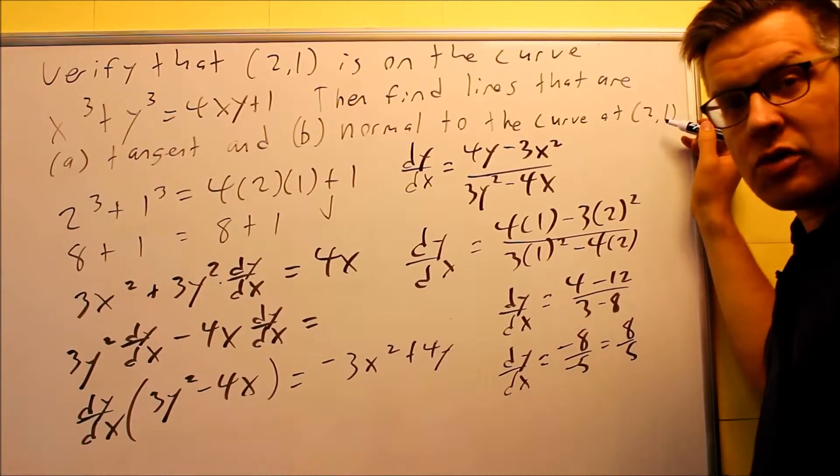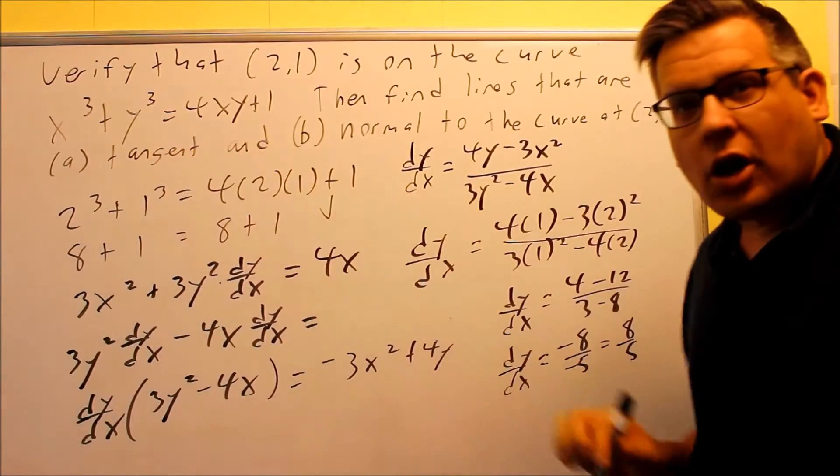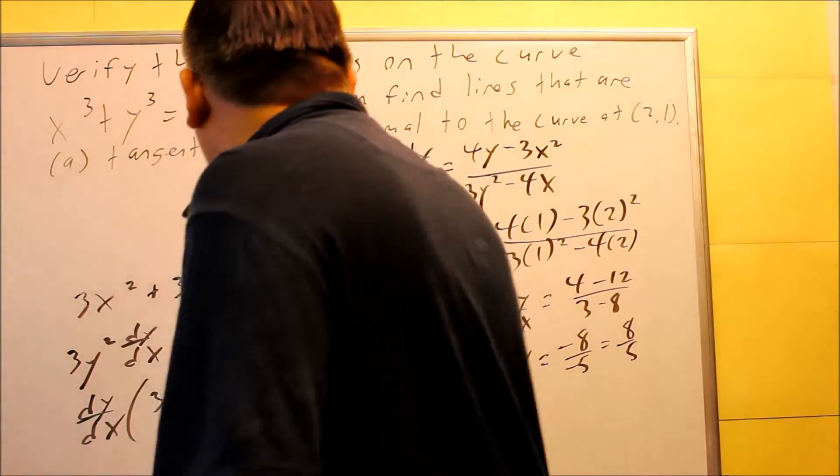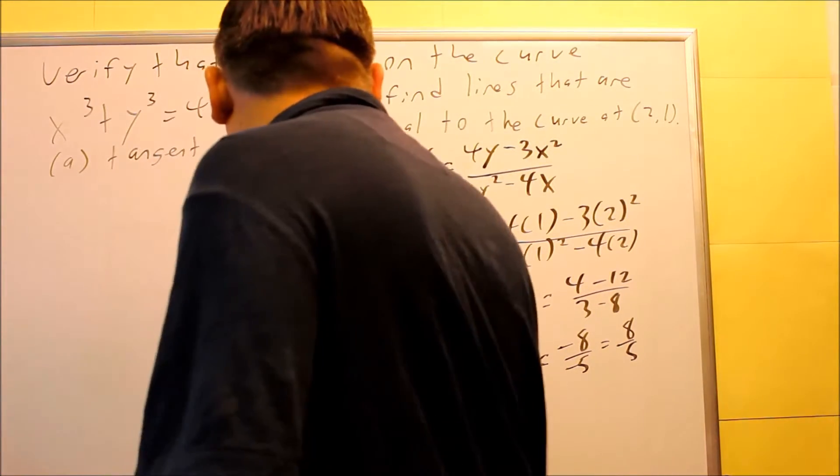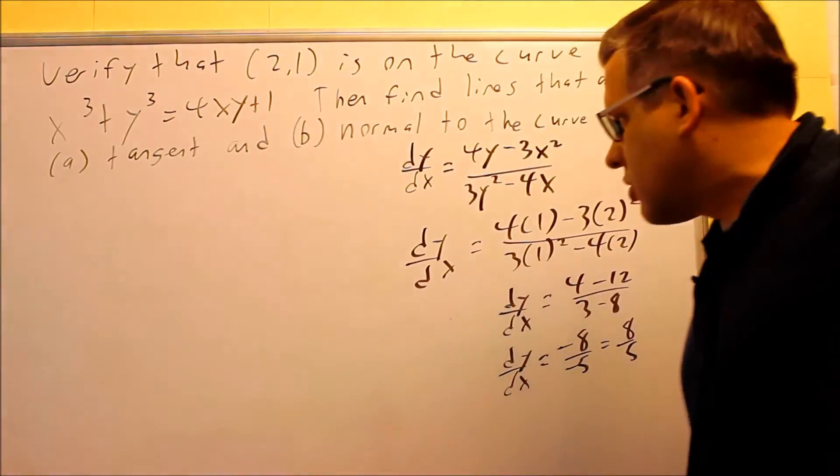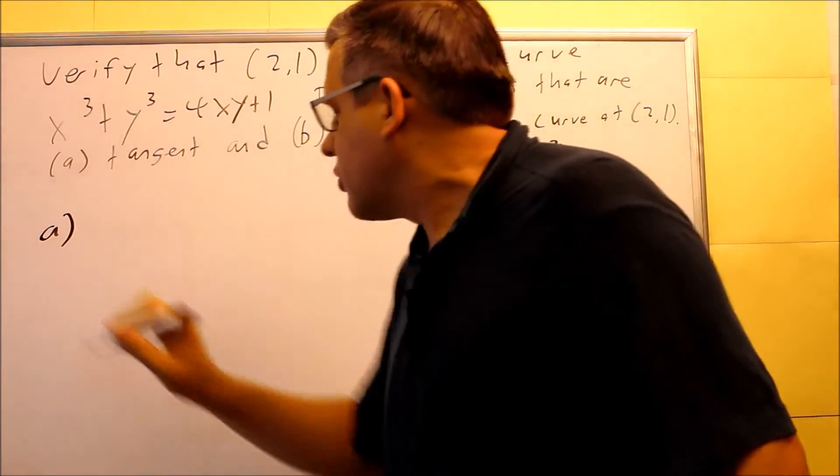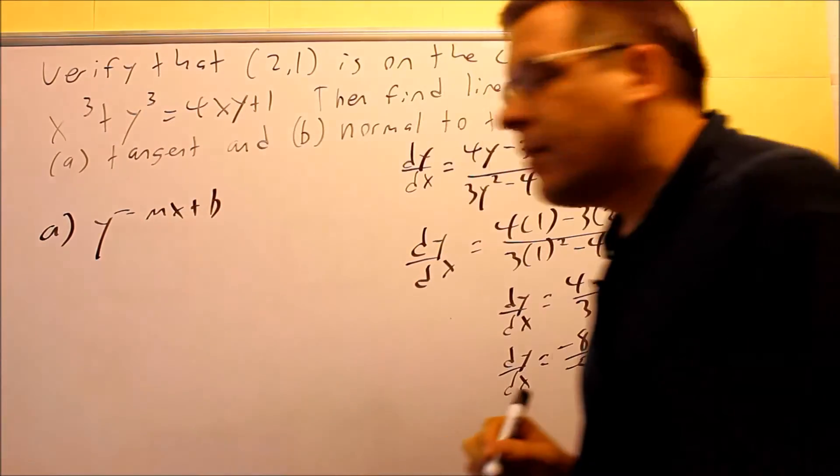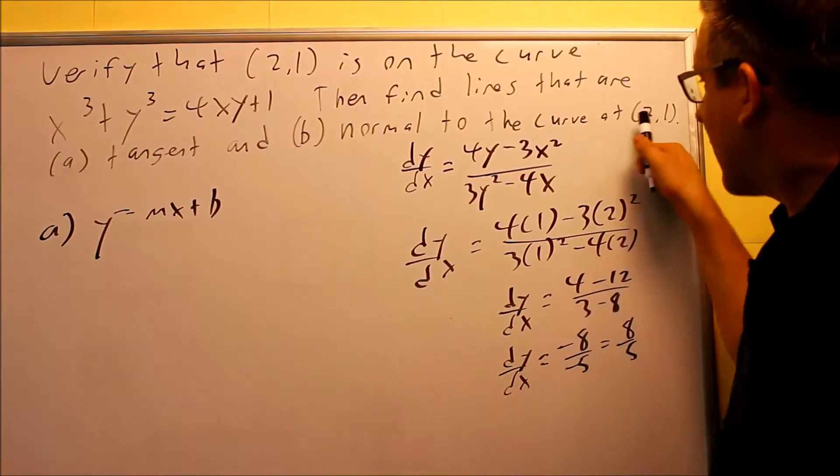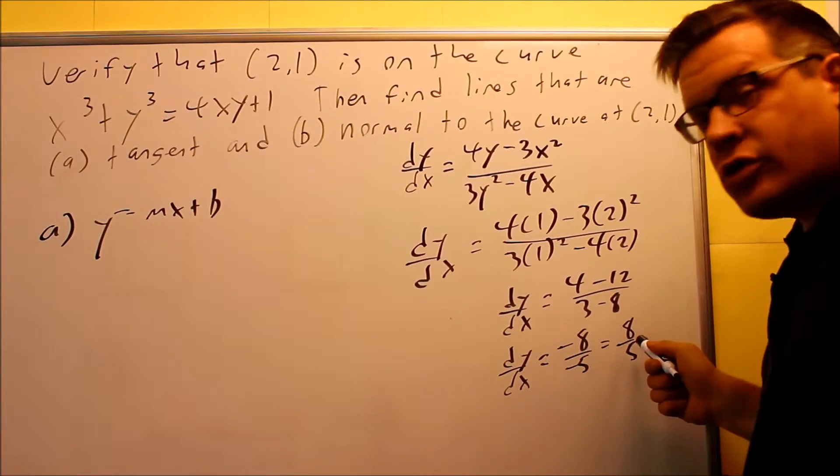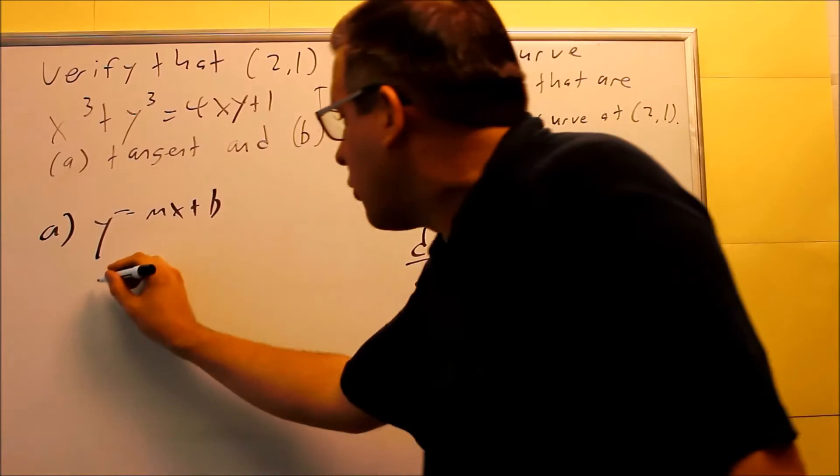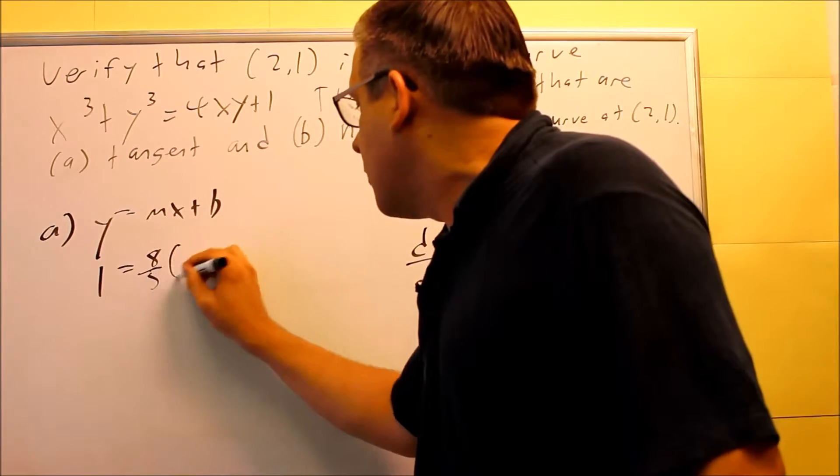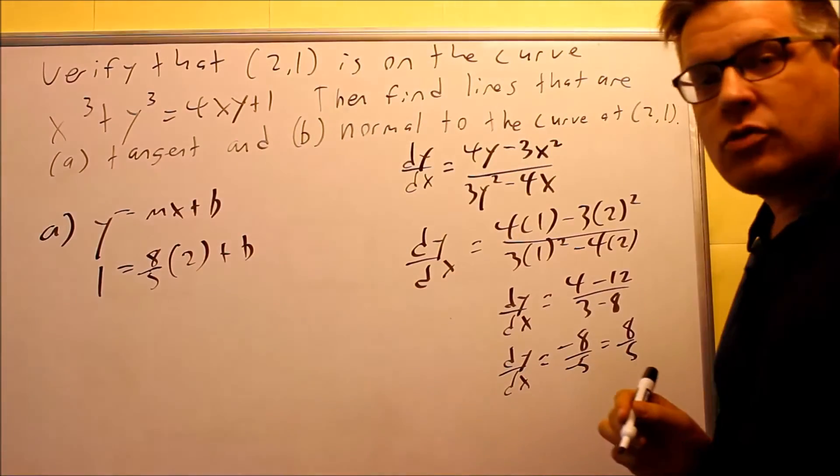So we have a point that it goes through, and we have a slope. We can now do part A to find the tangent. Okay, so for part A, for tangent, we'll do that first. I'm going to use y equals mx plus b, and we have the x and the y right here, the 2 comma 1. We have our m, which is 8 fifths. So I'll put in a 1 for the y. I have 8 fifths for m, a 2 for x, and that's going to leave us with b.